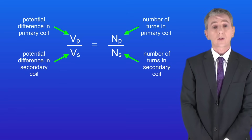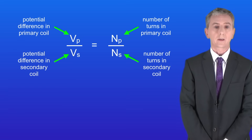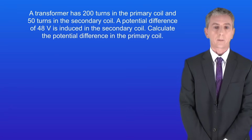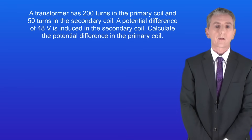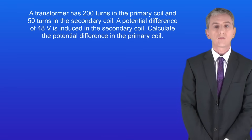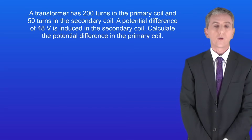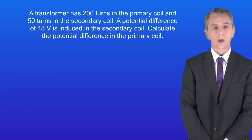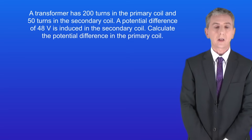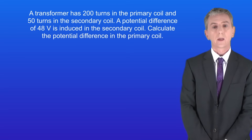You are given this equation in the exam so you don't need to learn it. Here's a typical question: a transformer has 200 turns in the primary coil and 50 turns in the secondary coil. A potential difference of 48 volts is induced in the secondary coil. Calculate the potential difference in the primary coil.